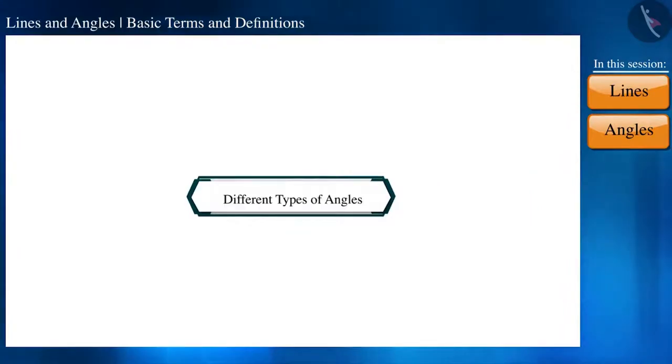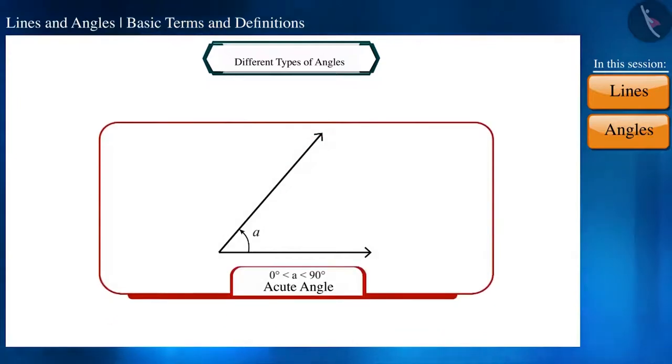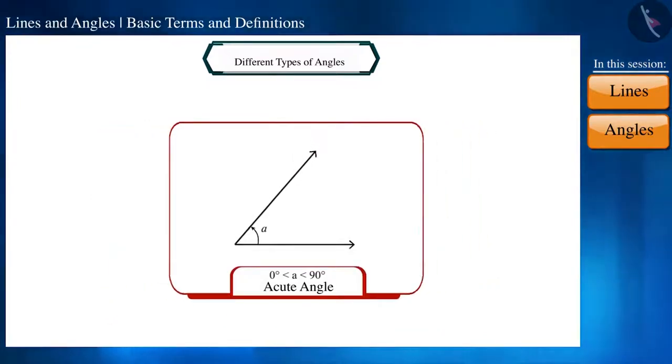Friends, in the previous classes, we studied about different types of angles. Let's repeat it once. If the measure of an angle is between 0 degrees and 90 degrees, then we call it an acute angle. If the measure of an angle is exactly 90 degrees, then we call it a right angle.